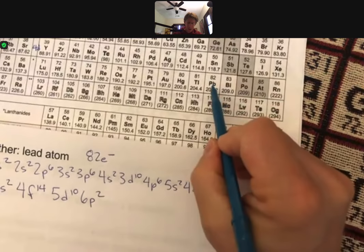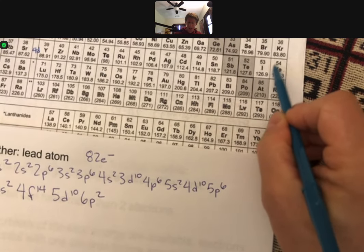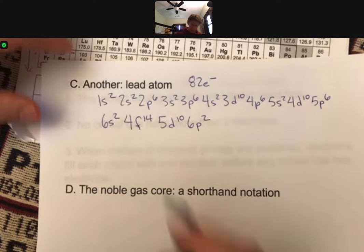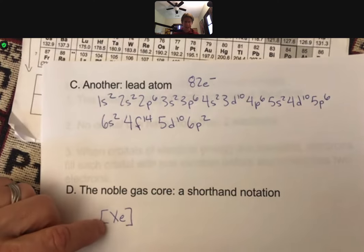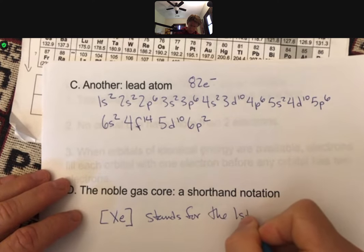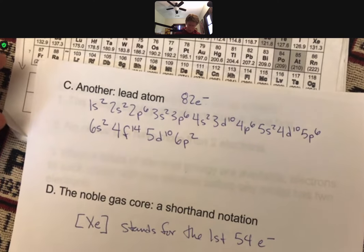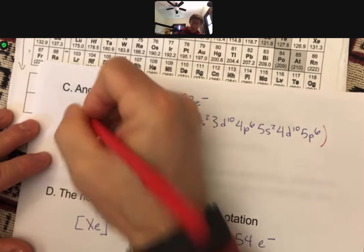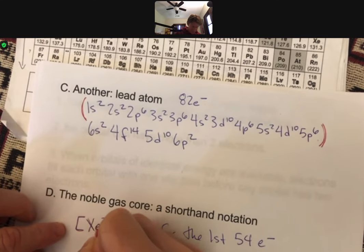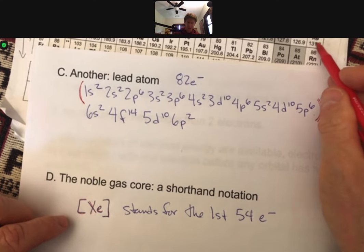But what you do is you go where lead is, and you go backwards, reverse ding, and you come up to here, and the previous noble gas before lead is xenon Xe. And so Xe stands for the first 54 electrons. So instead of writing the first 54 electrons, which will end with 5p, so the first 54 electrons, which does work out that it's these 54 electrons, now is represented by, and these are square brackets with the chemical symbol for the noble gas core right here.